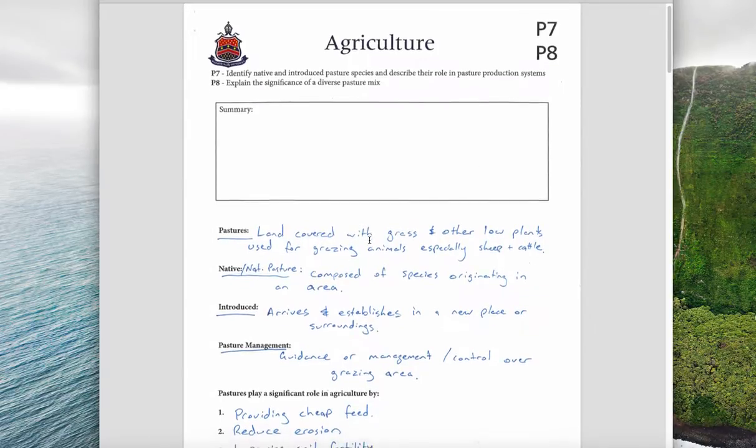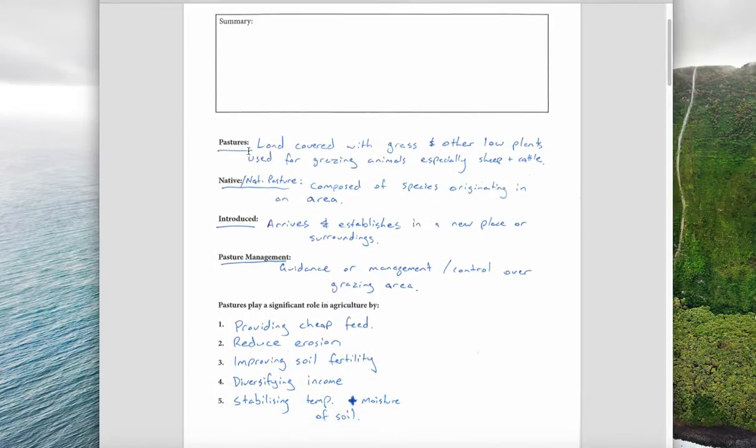So first of all we'll start with some definitions. A pasture is an area of land covered with grass and other low-lying plants used for grazing of animals, especially sheep and cattle.